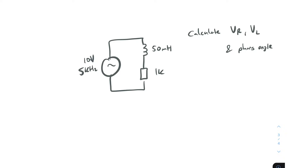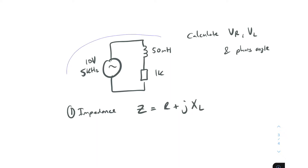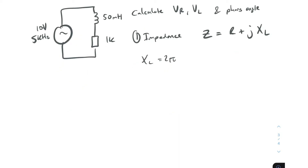In order to find the voltage across the resistor and the inductor, we need to find the current. We don't have the current right now, so we need to calculate it by finding the circuit impedance. Impedance Z equals the resistor plus the magnitude of XL. XL is equal to 2π × f × L.